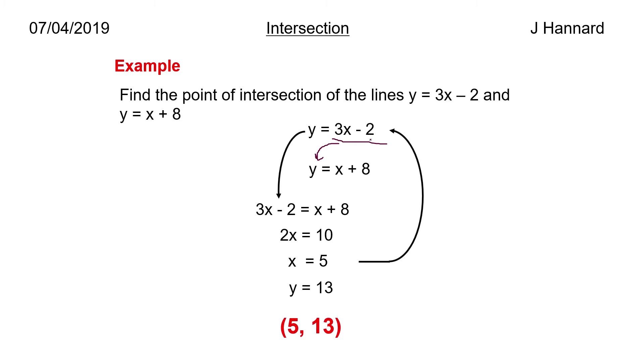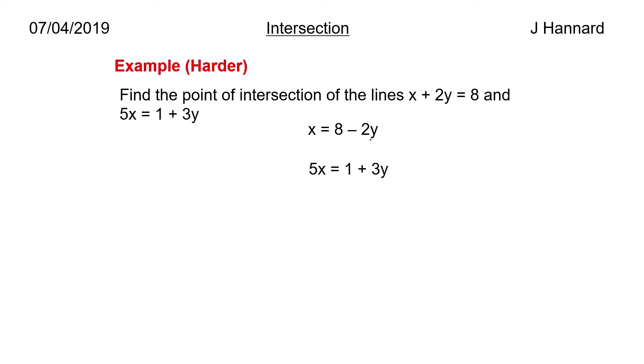Let's do another one then. Find the point of intersection of the lines x plus 2y equals 8 and 5x equals 1 plus 3y. So this one's a little bit more tricky simply because we haven't got y on its own this time, but that's easy. We'll just make x on its own so we take the 2y over the other side and we get x equals 8 minus 2y.